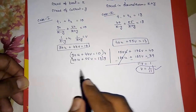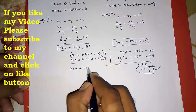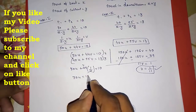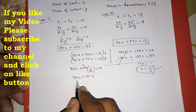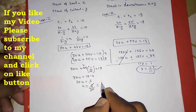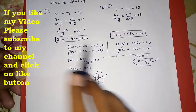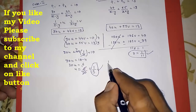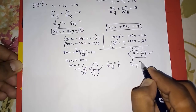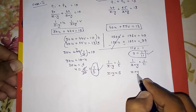Now substitute V = 1/11 into the first equation: 30U + 44 × (1/11) = 10, which gives 30U + 4 = 10, so 30U = 6, and U = 6/30 = 1/5. We have U and V, but we need X and Y. Since U = 1/(X - Y) = 1/5, we get X - Y = 5. Since V = 1/(X + Y) = 1/11, we get X + Y = 11.